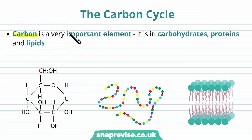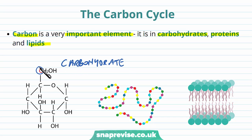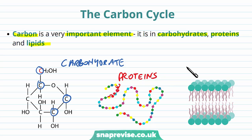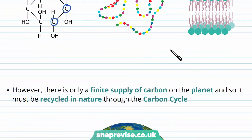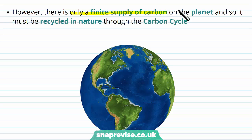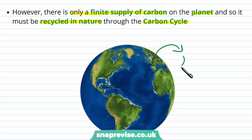Carbon as an atom and an element is very important for life. It's found in carbohydrates, proteins, and lipids. When you look at the molecular structure of these different types of molecules, you can see that carbon is central to all of them. For example, in a carbohydrate, carbon crops up in lots of different places in the molecule. It's found as the core part of amino acids in proteins, and it's also part of lipids too, for example in the phospholipid bilayer. There's only a finite supply of carbon on the planet, so it has to be recycled through nature if life is to continue to grow, and the way it gets recycled is through the carbon cycle.